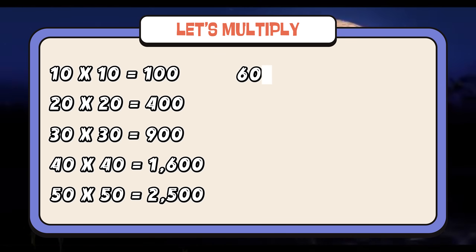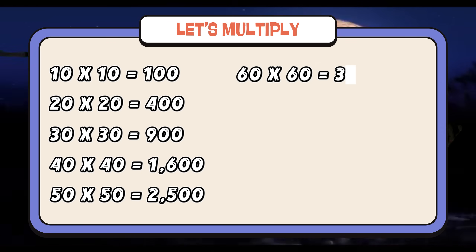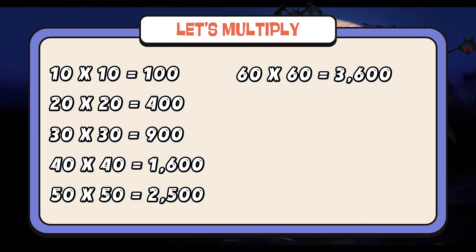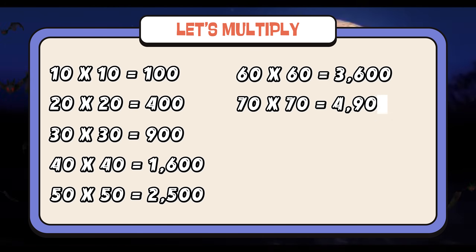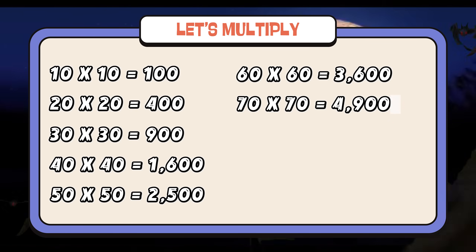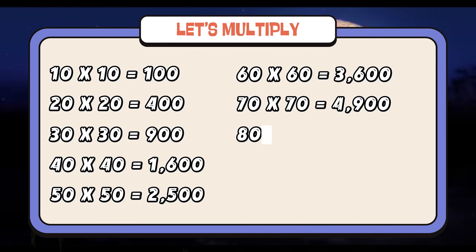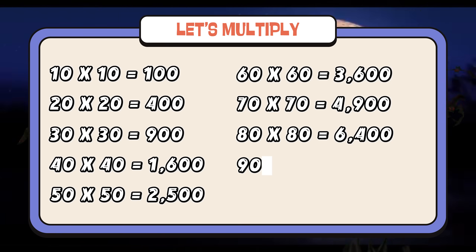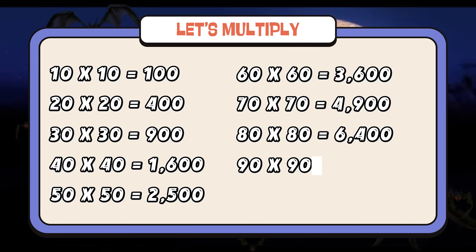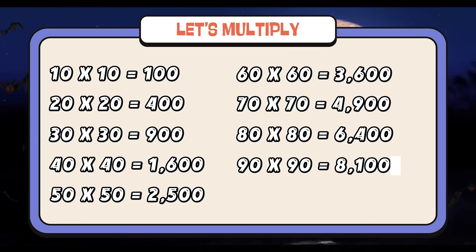60 times 60 is equals to 3,600. 70 times 70 is equals to 4,900. 80 times 80 is equals to 6,400. 90 times 90 is equals to 8,100.